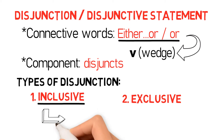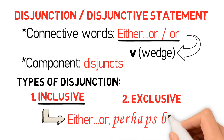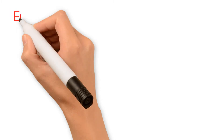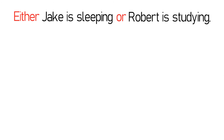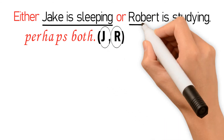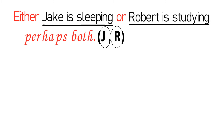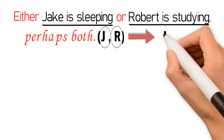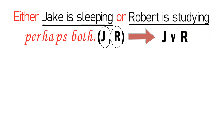An inclusive disjunction uses the connective either-or, perhaps-both. Consider this example: Either Jake is sleeping or Robert is studying, perhaps-both — symbolized as J or R. If we let J stand for Jake is sleeping and R for Robert is studying, the statement is symbolized as J or R. Note that the constants J and R do not just represent Jake and Robert respectively; rather, they represent the entire statements. Thus, J represents Jake is sleeping, while R represents Robert is studying.